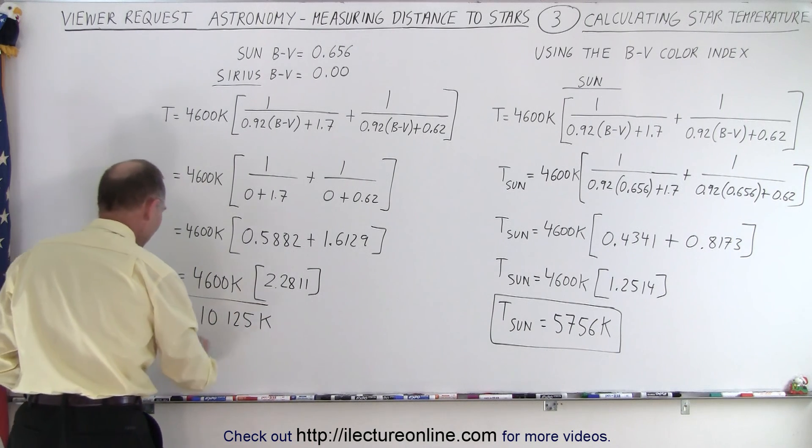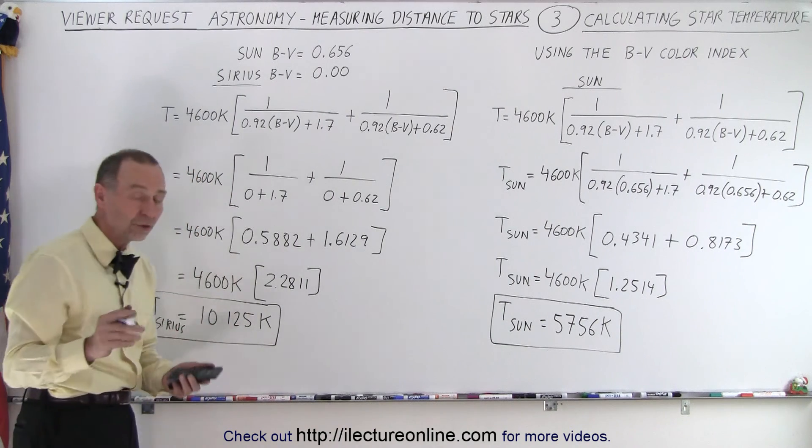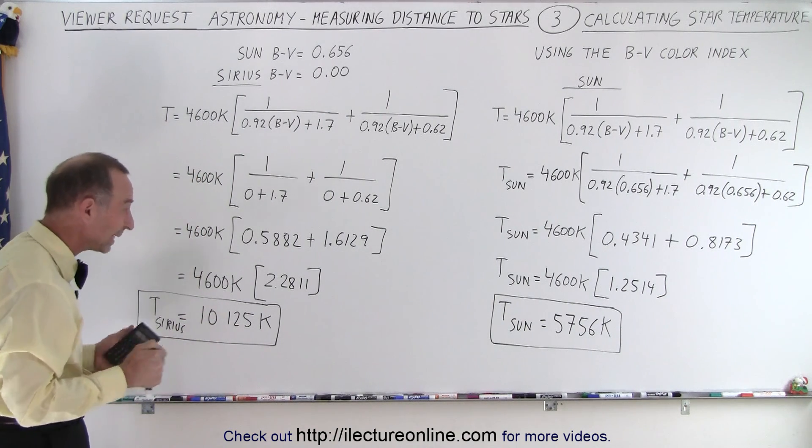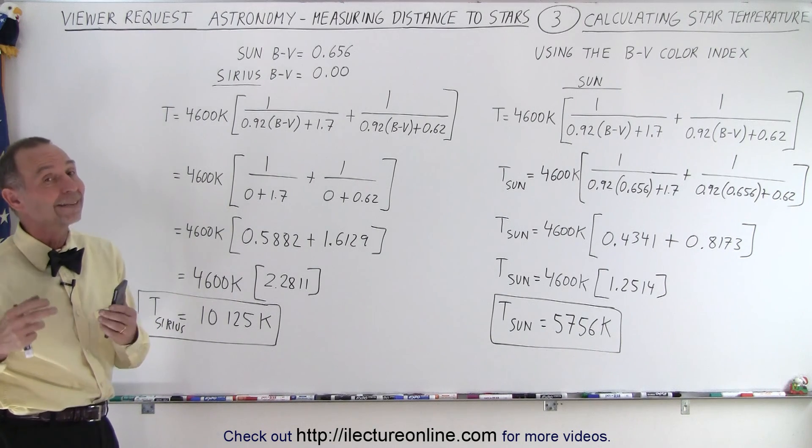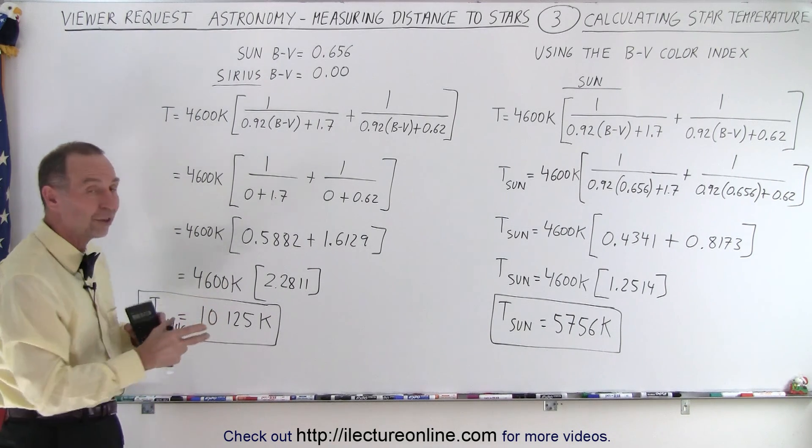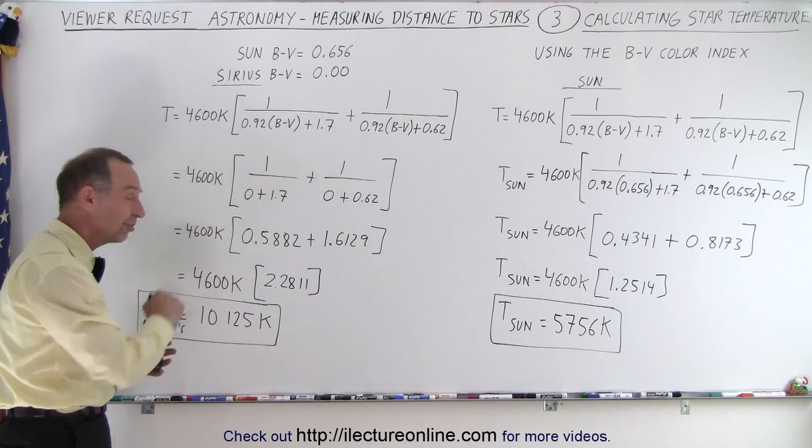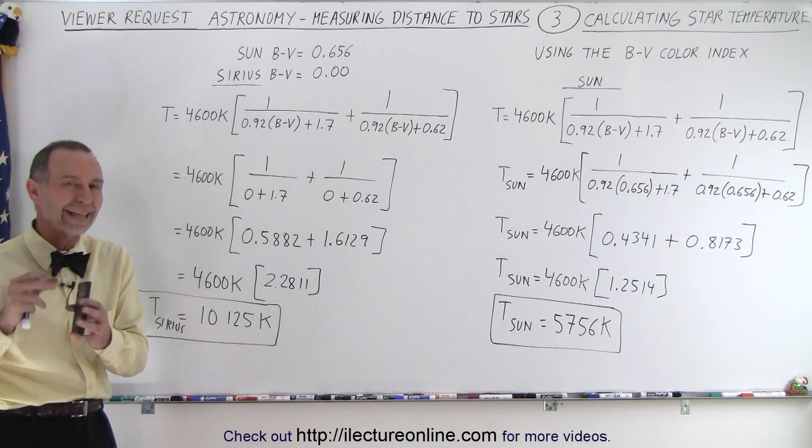I believe that the actual accepted value of the temperature of Sirius is slightly below 10,000, like 9,900 and something, but again, it's not an exact science when it comes to finding exact values. What is the real surface temperature of the Sun, the real surface temperature of Sirius? It's close to these numbers, not absolutely exact,